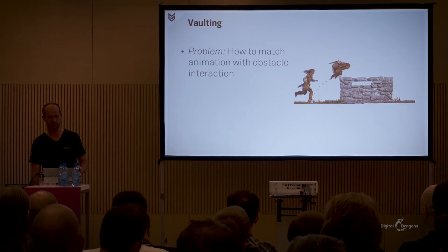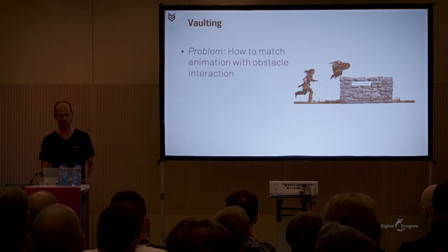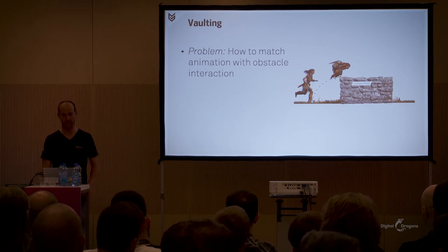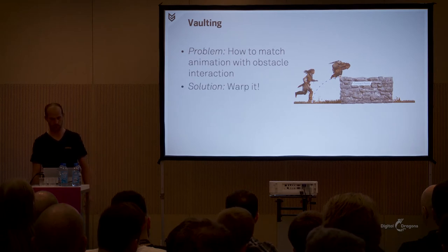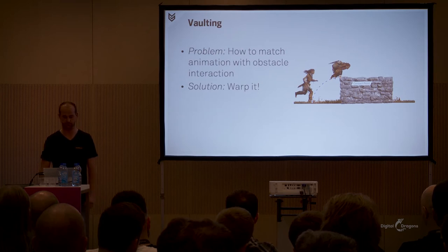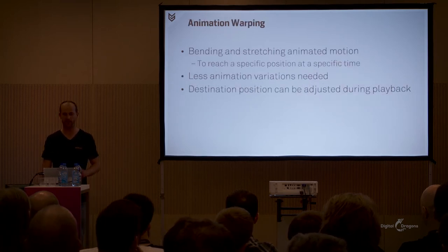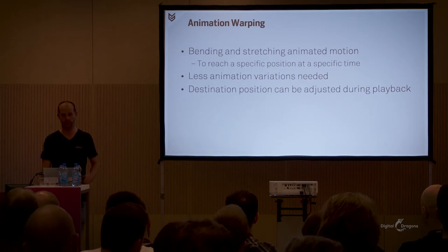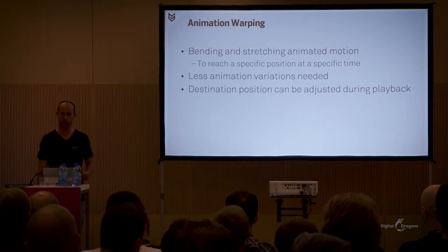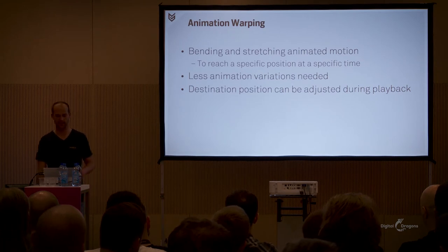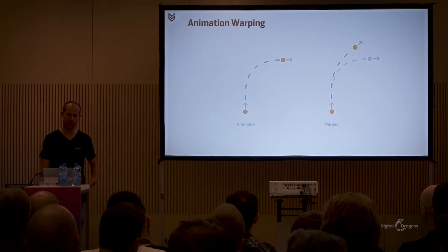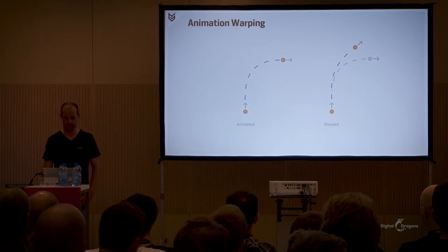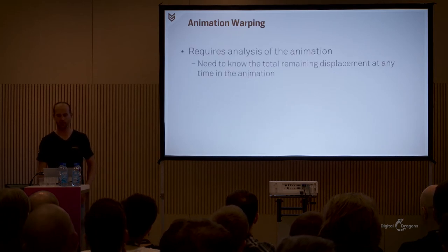Having looked at finding a valid vault transition, let's now move on to executing one. As a result of supporting a variable range for each vault transition, we introduce a problem: the obstacle probably never has the exact same metrics as the motion in the animation. So how can we make sure the transition will match the obstacle and actually intersect with the shape? We use animation warping to solve this problem. Animation warping is the bending and stretching of an animated motion to reach a specific position at a specific time. The advantage of warping is that you don't need a lot of unique animations to cover all cases, and the destination position can be adjusted during playback.